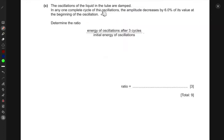The oscillations of the liquid in the tube are damped. In any one complete cycle of the oscillations, the amplitude decreases by 6% of its value at the beginning of oscillations. Damping could be due to air friction, and that friction is causing the amplitude to decrease. We are required to determine the ratio of energy of oscillations after three cycles to the initial energy of oscillations.